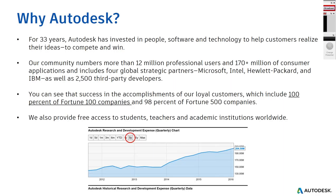A bit of background on Autodesk: we've been running since 1984 — about 33 years — and have invested heavily in technical, marketing, and sales people, software, and technology to help customers realise their ideas and win more work. We have about 12 million professional users and 170 million consumer application users, with four global strategic partners including Microsoft, IntelliCure, Packet, and IBM, plus a large number of third-party developers writing add-ins and APIs. We're in the Fortune 100 companies and also provide free software access for students, including cloud credits.